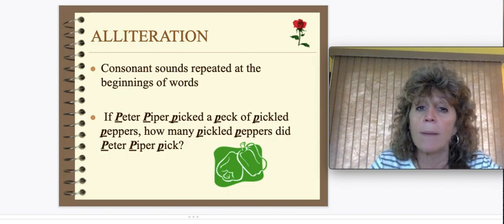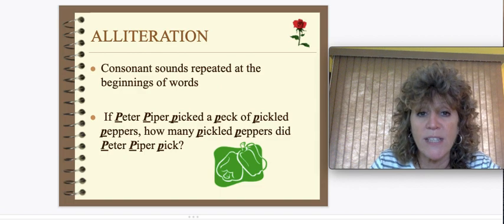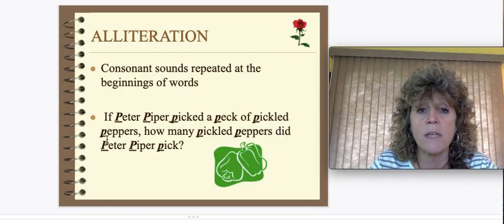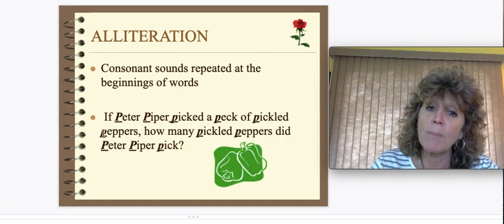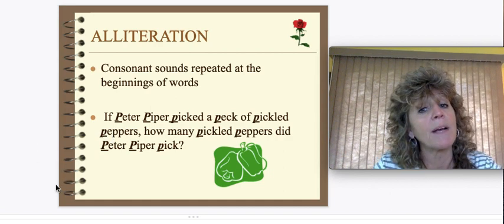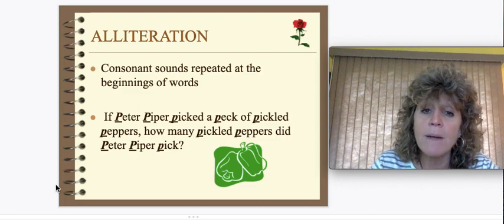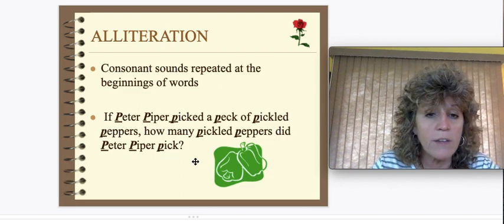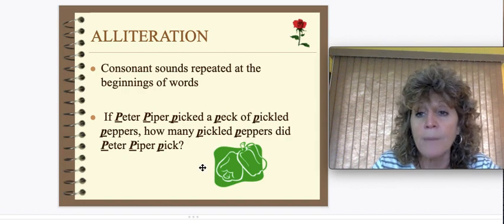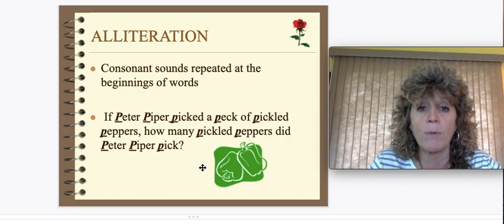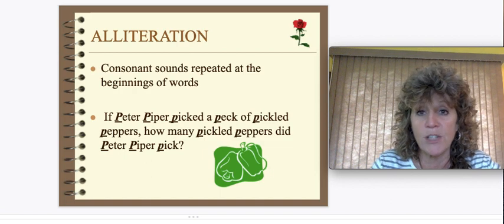Alliteration — you probably remember that from last week's lessons. Alliteration is when consonant sounds repeat at the beginning of words. Example: "If Peter Piper picked a peck of pickled peppers, how many pickled peppers did Peter Piper pick?" This is a great example of alliteration because all these words begin with a P sound going all the way through.